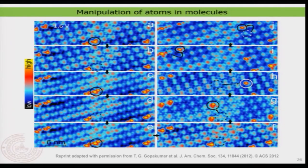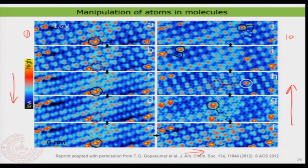This can be used as an information array where the chlorine-containing state is kind of 1 and the non-chlorinated state is 0. You can see here a sequence of images from 1 to 10, showing the systematic manipulation of chlorine atoms. You go on top of a molecule with chlorine, switch the voltage, pick the chlorine atom — the contrast of that molecule changes because the chlorine is now on the tip. On the same molecule you can put the chlorine back, or you can move from one molecule to another. There are enormous possibilities.